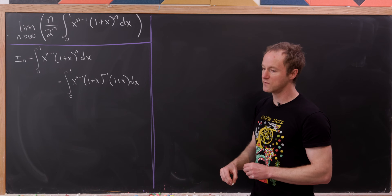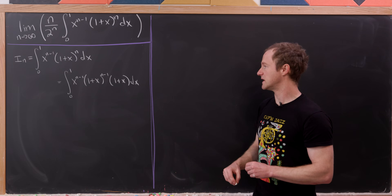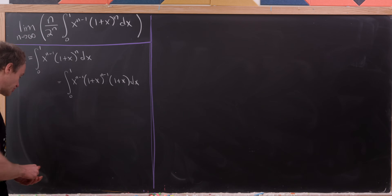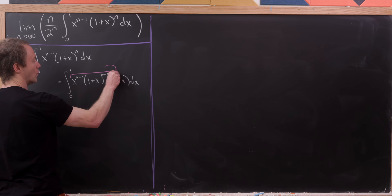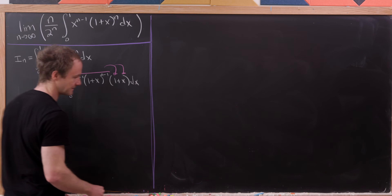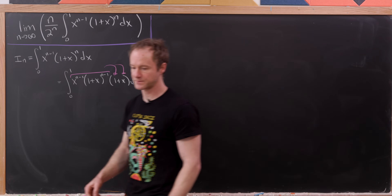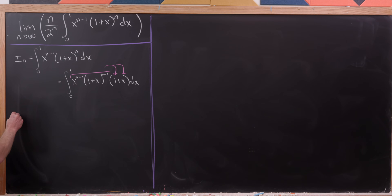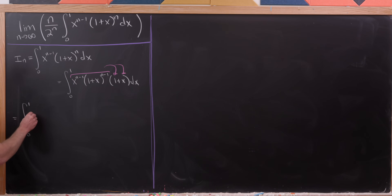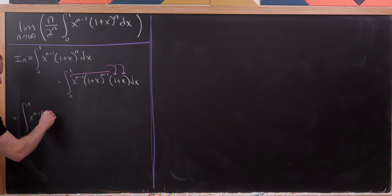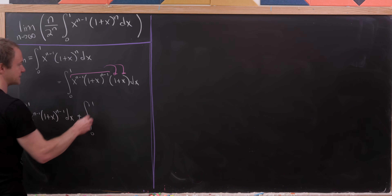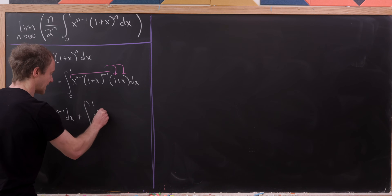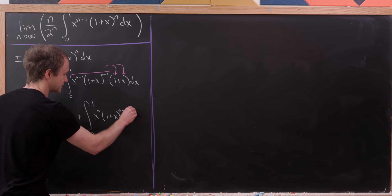The motivation is to distribute this through onto the 1 and then onto the x. So bringing that through, that's going to become two integrals: the integral from 0 to 1 of x to the n minus 1 times 1 plus x to the n minus 1 dx, plus the integral from 0 to 1 of x to the n times 1 plus x to the n minus 1 dx.